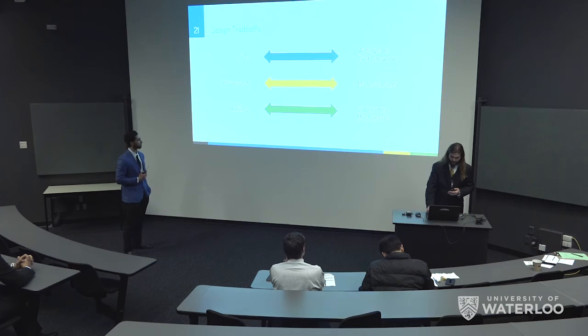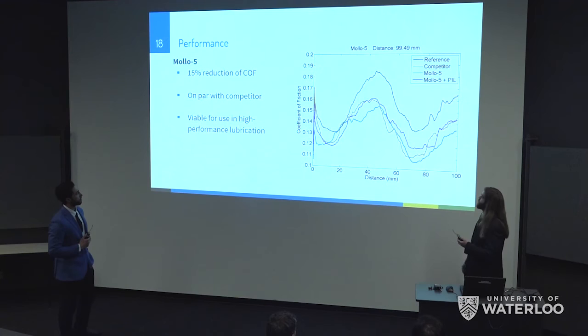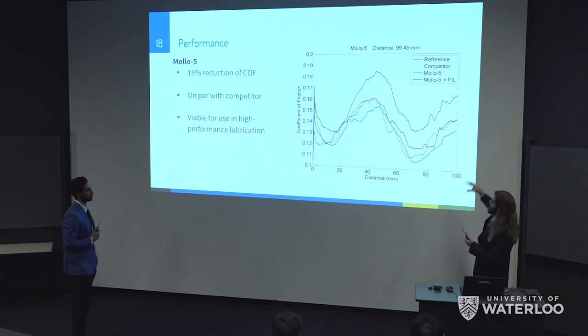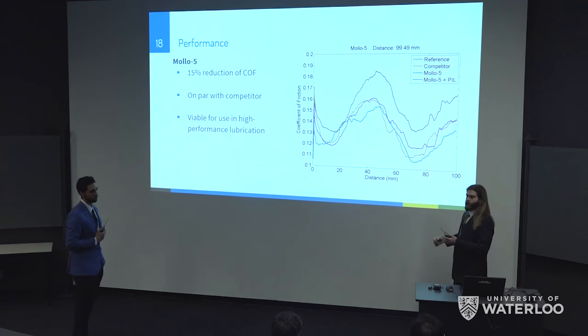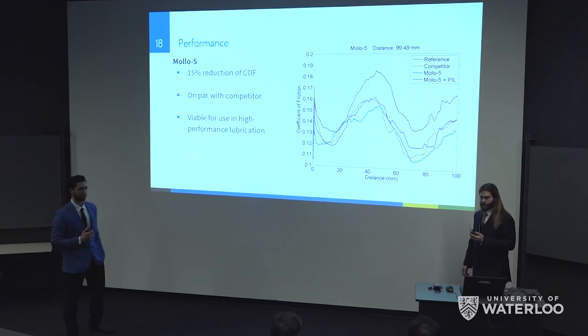Question from evaluator: Can you go to slide 18? One of your conclusions says you have higher performance. When you said there's a 15% improvement, I don't see it from looking at this graph. How do you get that measurement? Response: We essentially compared the black reference line with the blue MALDO product line — taking an average across the whole run — and determined the coefficient of friction value was reduced by 15%. This graph is designed to show the lubricating performance dynamics over time rather than a single set number.